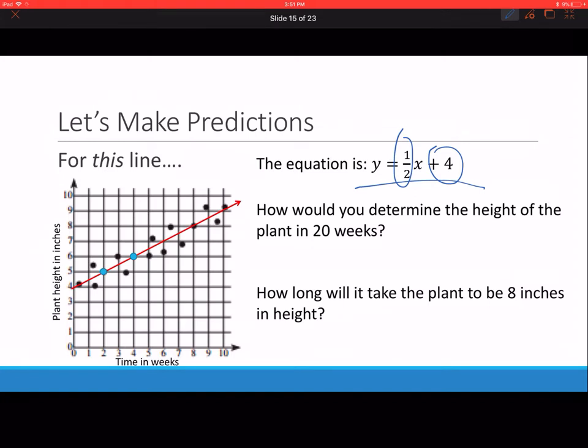We can also make predictions based on this line. How would you determine the height of a plant in 20 weeks? We know that 20 weeks is on the x. So if you replace 20 for the x, we would have y equals 1 half times 20 plus 4. Half of 20 is 10, so 10 plus 4 equals 14. 14 inches.